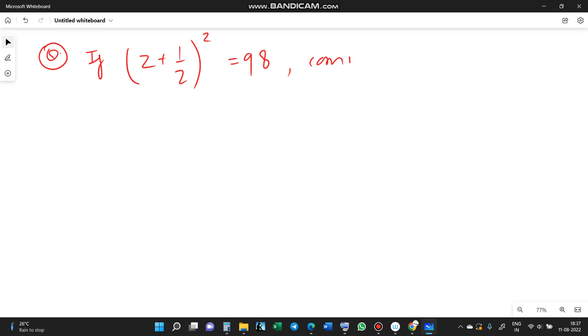Then compute Z square plus 1 by Z square. You have to give in Z plus 1 by Z whole square equals 98, and you have to compute Z square plus 1 by Z square.